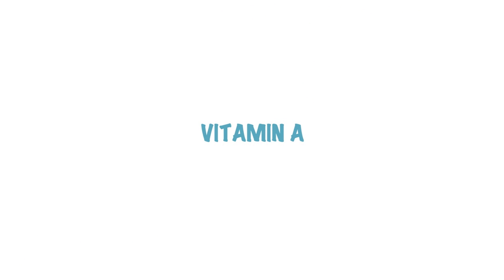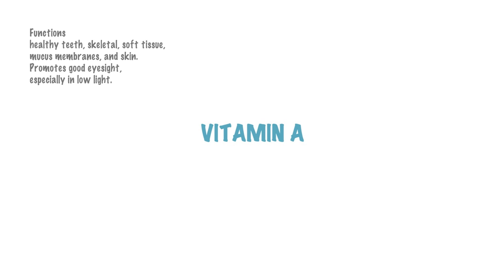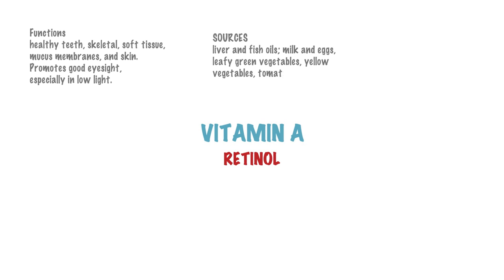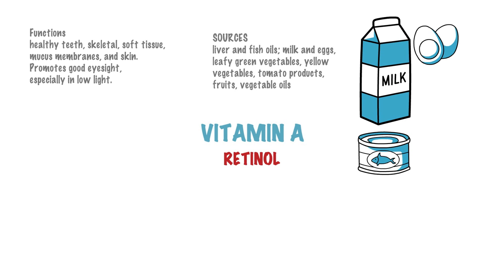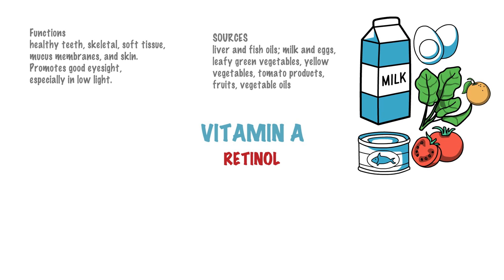First, we have Vitamin A. Vitamin A helps form and maintain healthy teeth, skeletal and soft tissues, mucous membranes and skin. It is also known as retinol because it produces the pigments in the retina of the eye. Vitamin A promotes good eyesight, especially in low light. It is found in high quantities in liver and fish oils. Other sources are milk and eggs, leafy green vegetables, orange and yellow vegetables, tomato products, fruits and some vegetable oils.